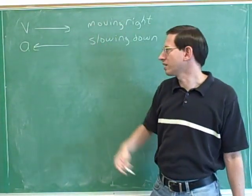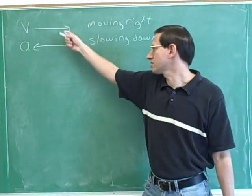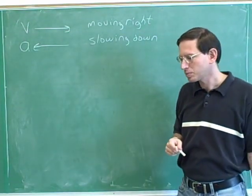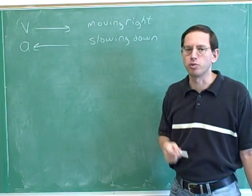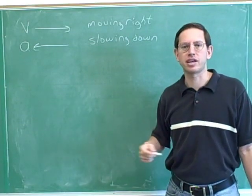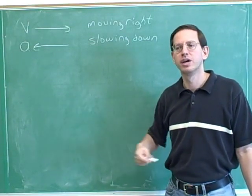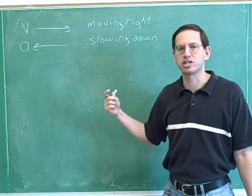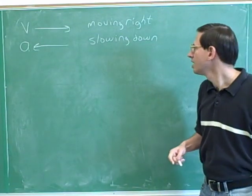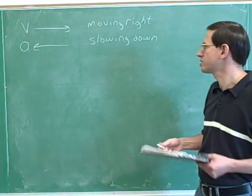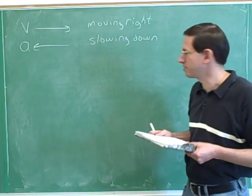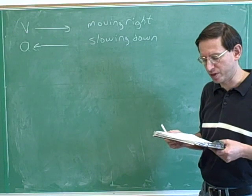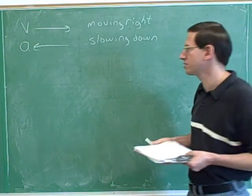Anti-parallel just means they're pointing in different directions — you can see that the acceleration and velocity are pointing in different directions. Of course, if the velocity were parallel to the acceleration, then we'd be speeding up. When the velocity and acceleration are parallel — meaning pointing in the same direction — we're speeding up. These are all concepts we've already seen in the previous series of videos, so this should have been a very easy review.